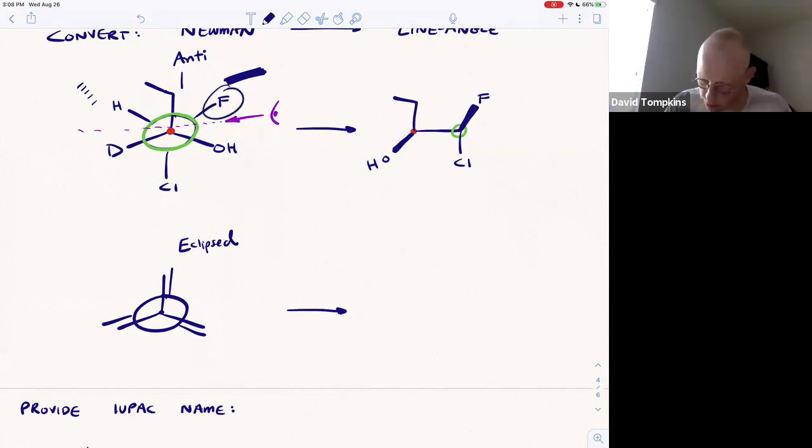Those two groups, fluorine and hydroxyl, are gauche to one another, so those two wedges are gauche or staggered. The two dashes are the groups going away from the eyeball. Deuterium is on the front carbon underneath the horizontal line. Hydrogen is on the back carbon above the horizontal line, so it's a dash up.